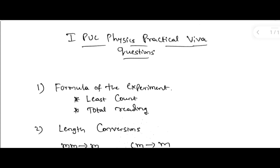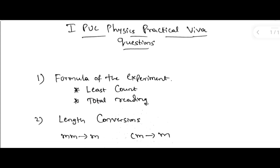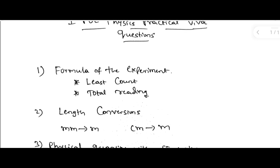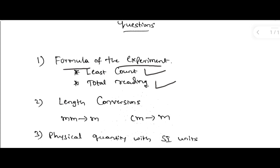You are going to get VAWA questions on the following basis. First of all, the formula of the experiment — you may get VAWA questions directly on the formula of the experiment you received. For example, if you get the screw gauge experiment, the examiner may ask questions on its formulas: the least count formula and the total reading formula, which you have to expand and answer.